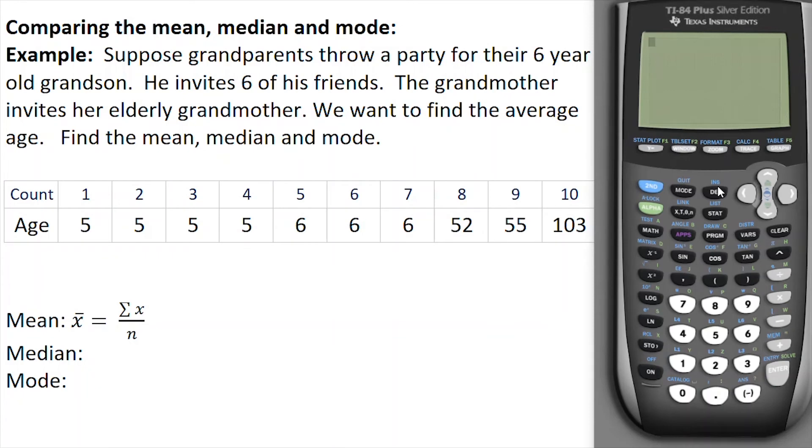I want to compare the mean, the median, and the mode with an example. Let's suppose we have grandparents that want to throw a party for their six-year-old grandson, and he invites six of his friends. The grandmother invites her elderly grandmother. We want to find the average age of the party, so we'll need to find the mean, the median, and the mode. We're going to use the calculator to help us with some of this.